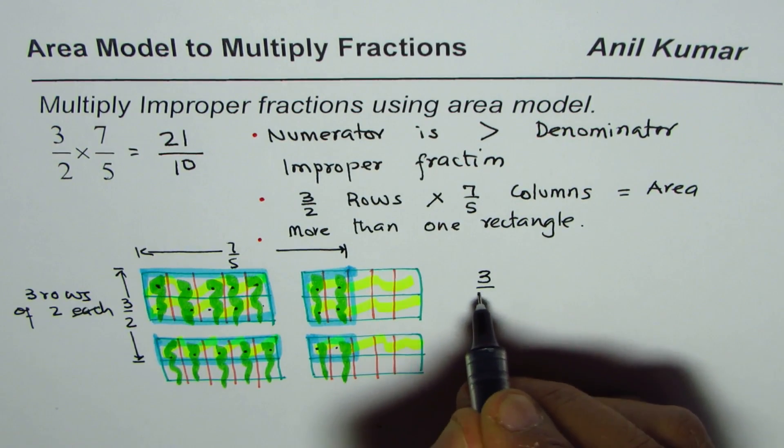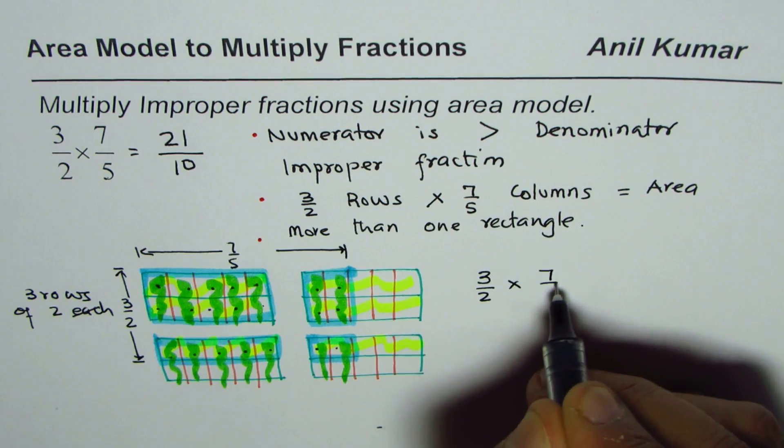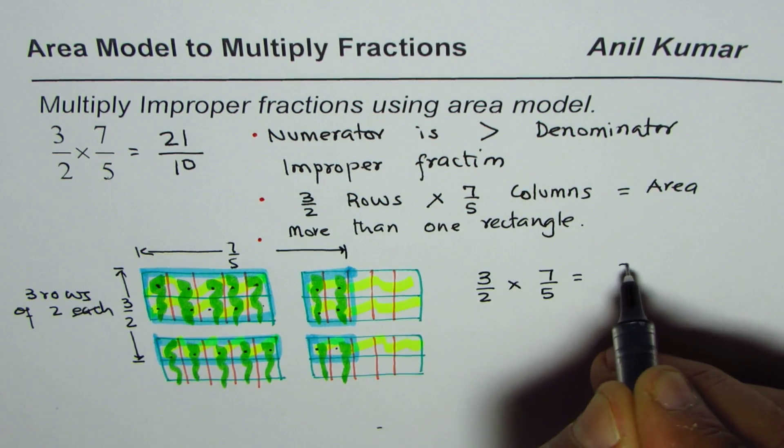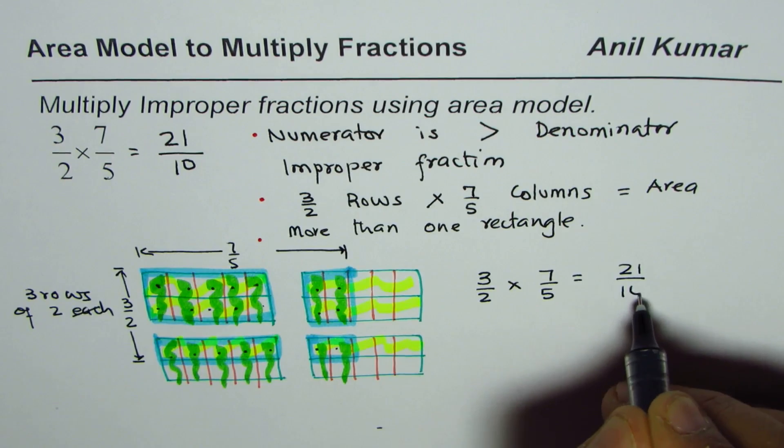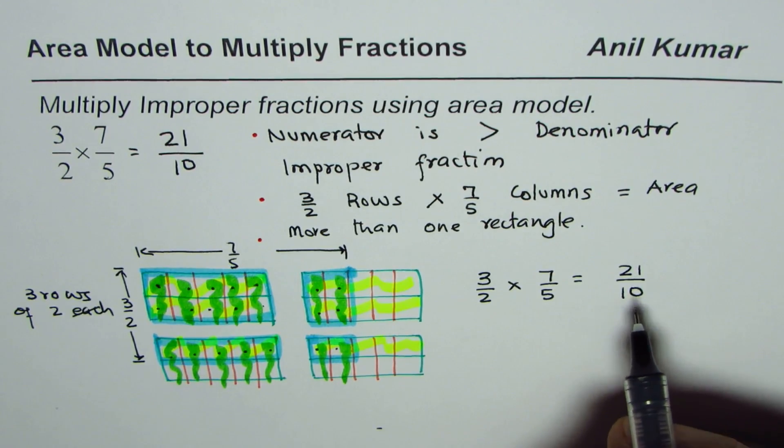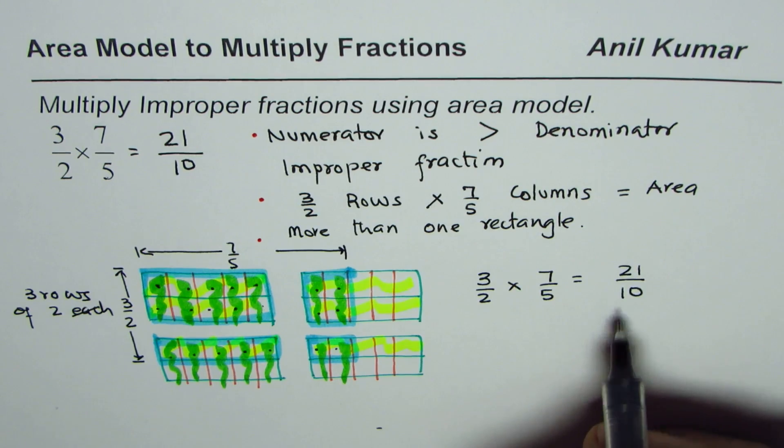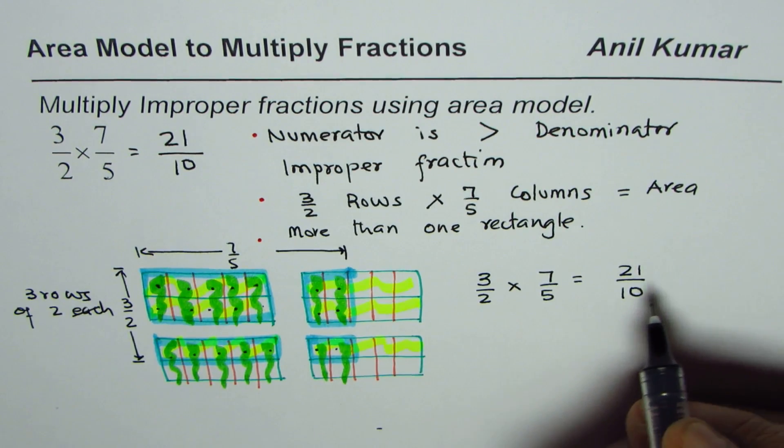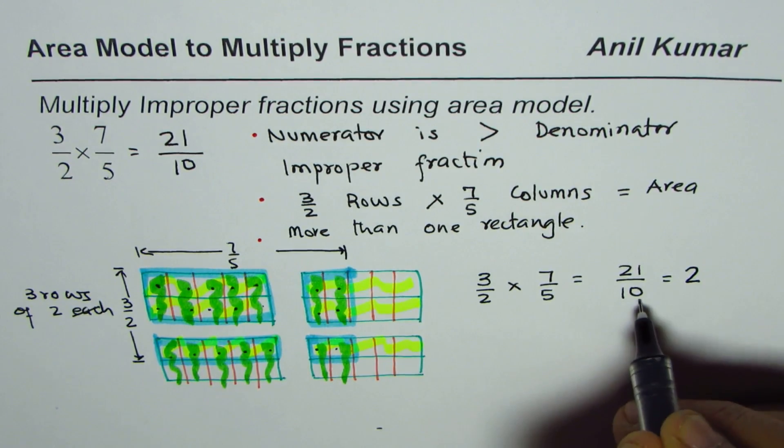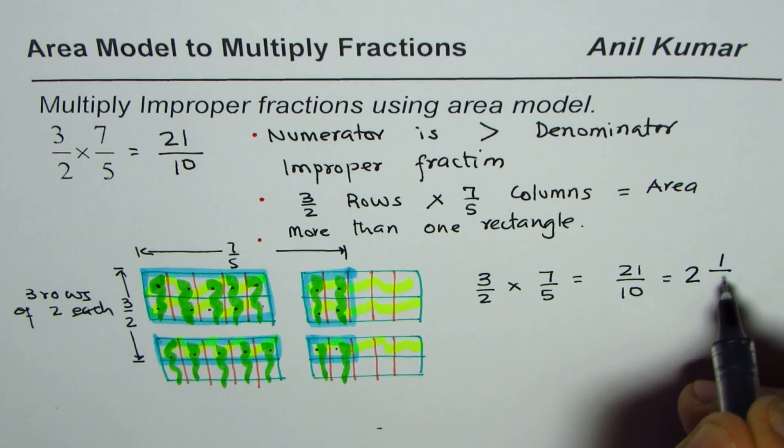We can write down the product as 3 over 2 times 7 over 5 equals 21 over 10. It is also good practice to write this number as a mixed number, so you can divide 21 by 10, you get two wholes which is 20, remainder is one tenth, so it could be written as 2 and 1 over 10.